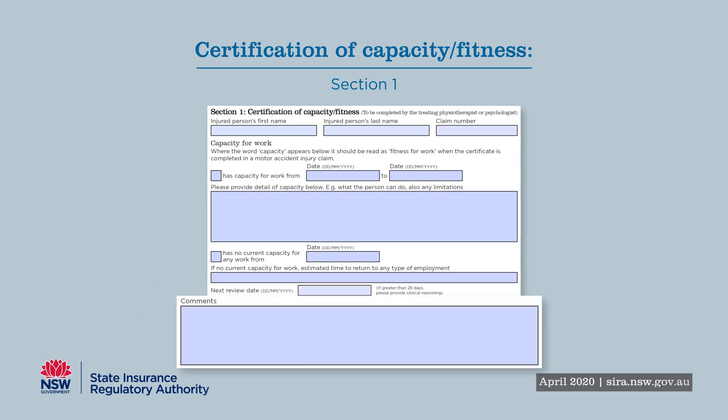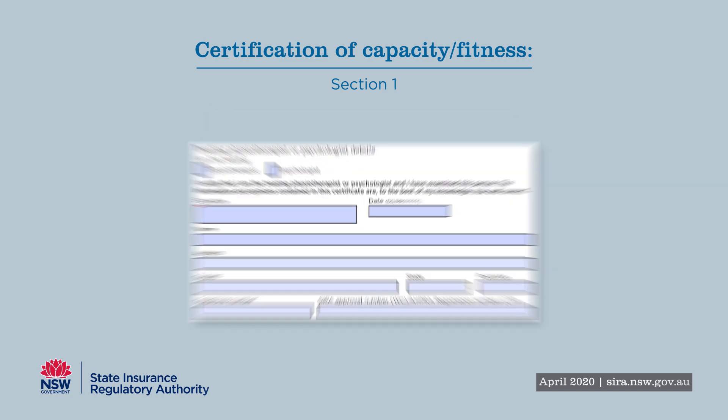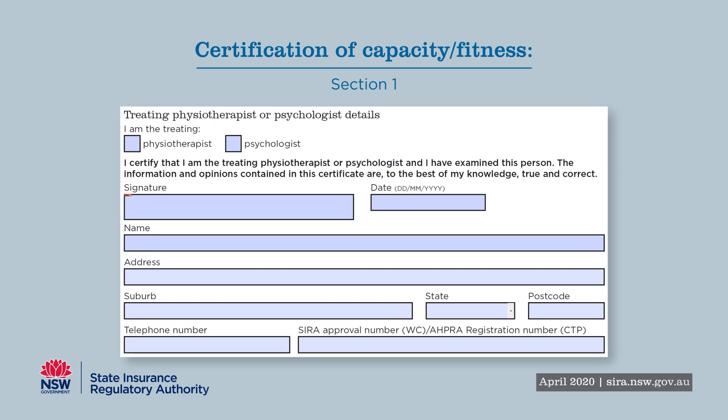Additional comments about capacity and limitations can also be made in the box provided. You will also fill in your treating health discipline, provide your signature and contact details.